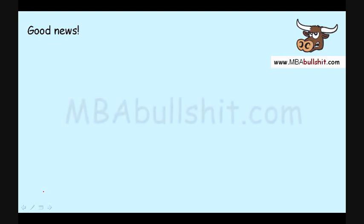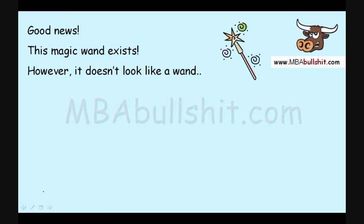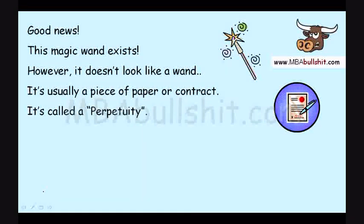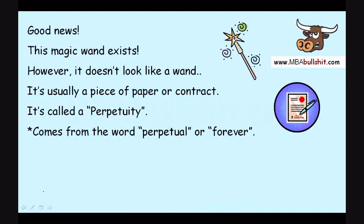I've got good news for you — this magic wand actually exists. However, it doesn't really look like a wand. It looks like a piece of paper or contract, and it is called a perpetuity. It comes from the word perpetual, which also means forever.